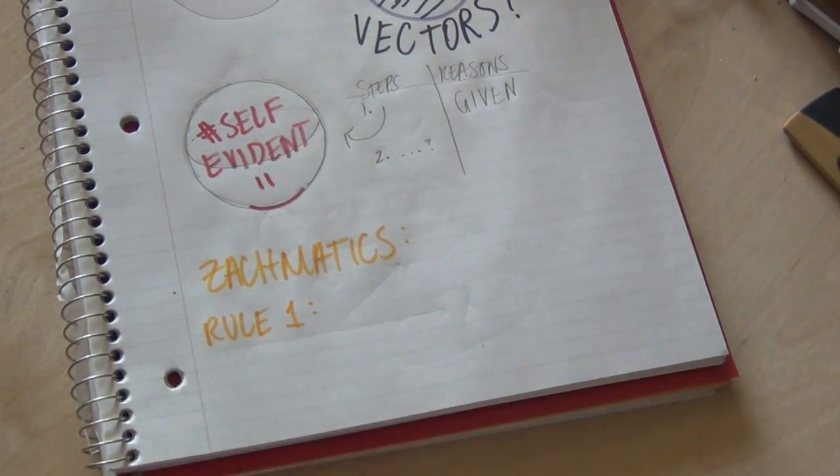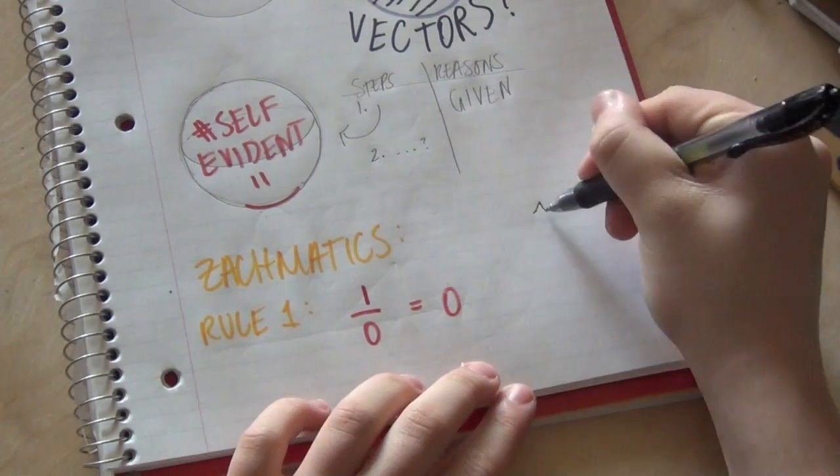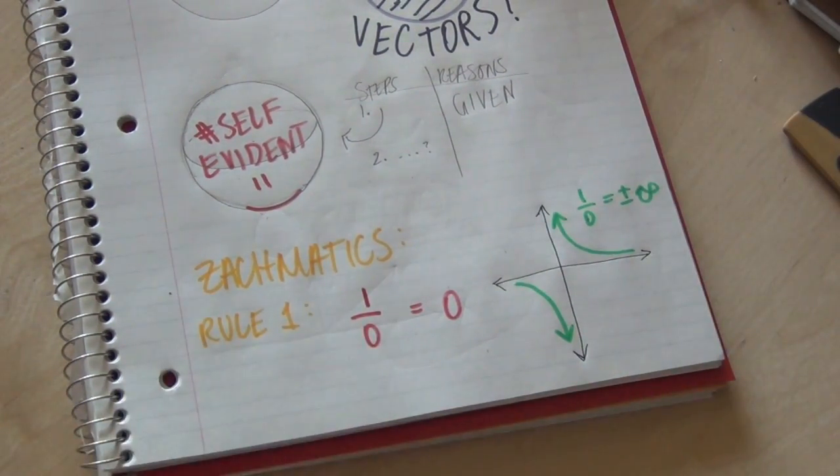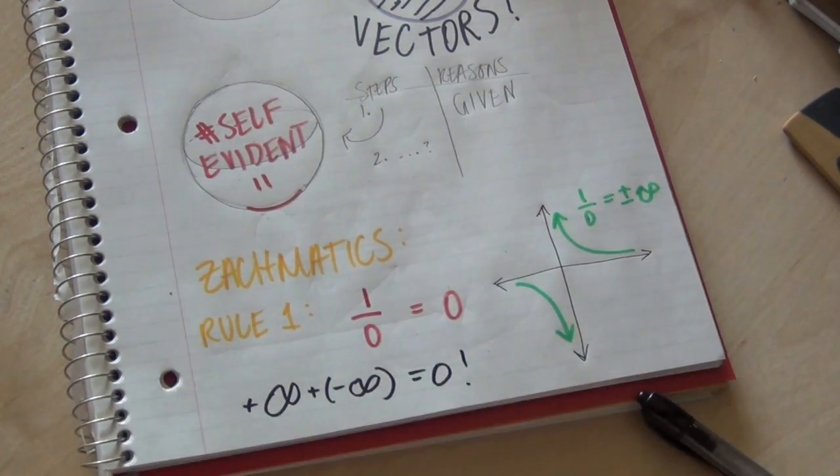Zachmatics only postulated that dividing by zero is okay and equals zero, because if you divide by zero, you get positive and negative infinity, which when added together is zero. And zero is cool, and I don't want it to feel left out.